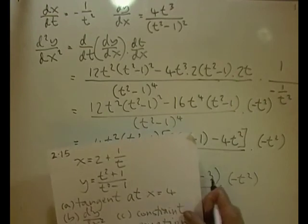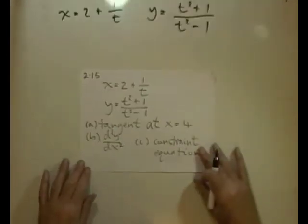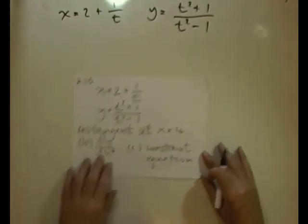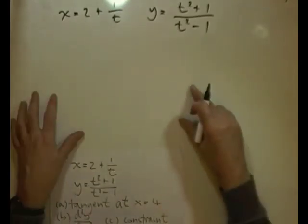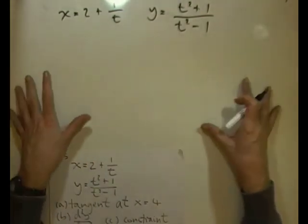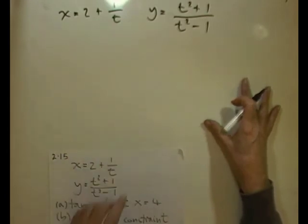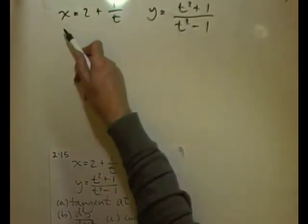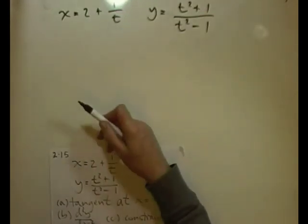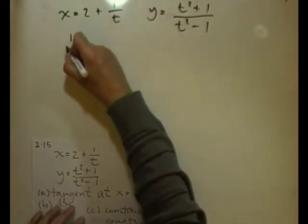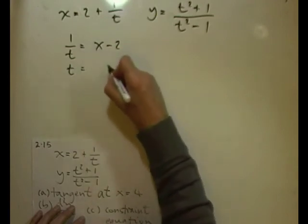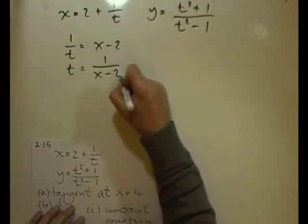Next, find the constraint equation. To do this I need to write y in terms of x by eliminating the parameter t. Rearranging x = 2 + 1/t: 1/t = x − 2, so t = 1/(x−2). I'll substitute this into the expression for y.